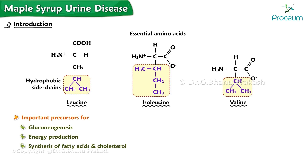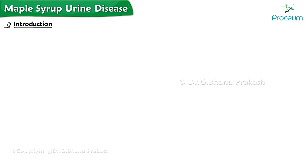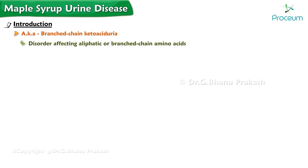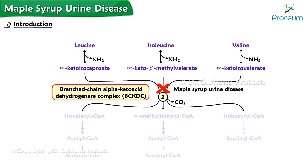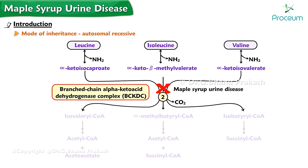Maple Syrup Urine Disease, MSUD, also known as Branch-Chain Ketoaciduria, is a disorder affecting the aliphatic or branch-chain amino acids. It is caused by a deficiency of branch-chain alpha-ketoacid dehydrogenase complex, BCKDC, the second enzyme of the metabolic pathway of the three branch-chain amino acids: leucine, isoleucine, and valine. The mode of inheritance is autosomal recessive.